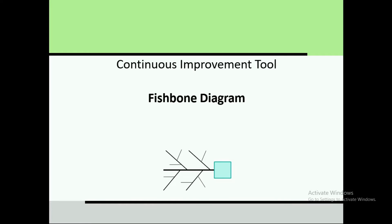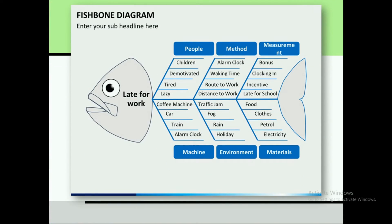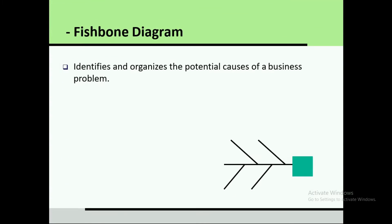It is called the fishbone diagram because the structure of this diagram looks like a fish. It shows the problem — for example, 'late for work' — and the primary factors contributing to it. In a machine category, this may include a clock, train, or coffee machine. In environment, it may be holiday, rain, or fog. We will discuss these in examples later on.